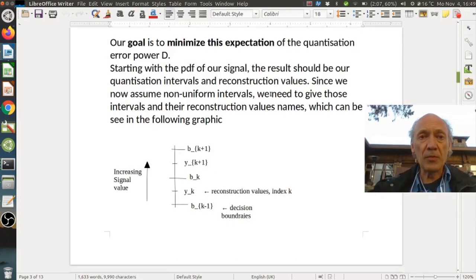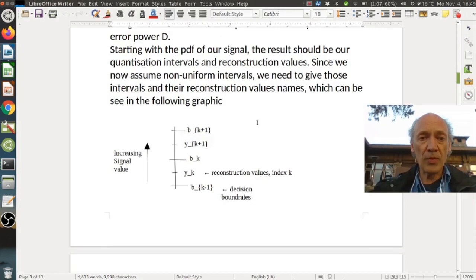So our goal is to minimize this expectation for the quantization error power d. So starting with the PDF of our signal, the result should be our quantization intervals, and reconstruction values. Since we now assume non-uniform intervals, we need to give those intervals and the reconstruction values names, which can be seen in the following graphic.